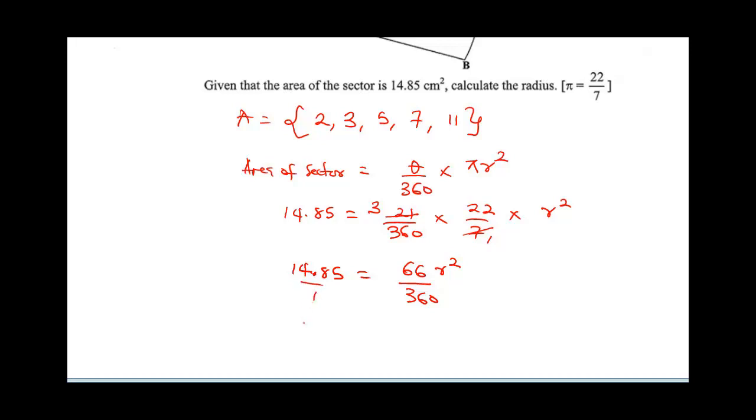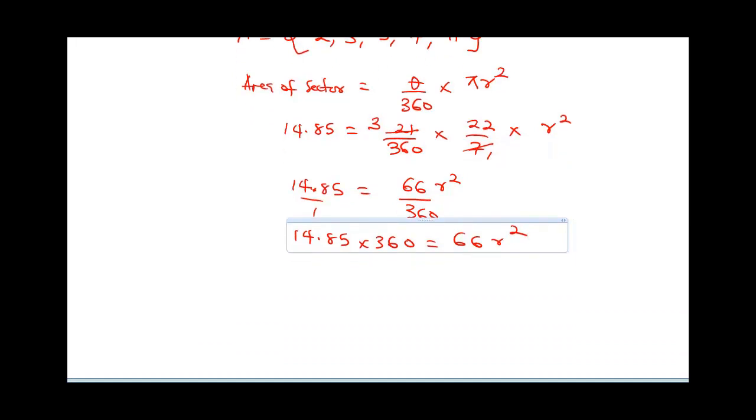Cross-multiply. This is going to be 14.85 times 360 is equal to 66 R squared. At this point, we can make R squared the subject of our formula. R squared is going to be 14.85 times 360 divided by 66.